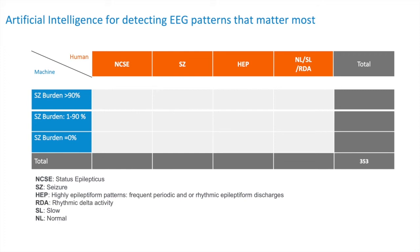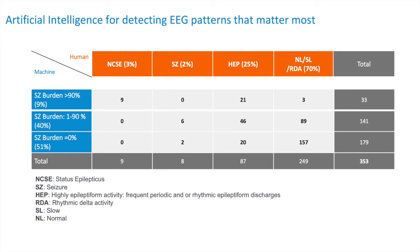Of 353 EEGs, this is what we got when humans labeled it versus what the machine labeled. All nine status epilepticus cases were labeled correctly by the machine. Three of 33 alarms were so-called false. Twenty-one of them were too sensitive but still pathological. One might argue that the epileptologist needs to take a look at these EEGs anyway.